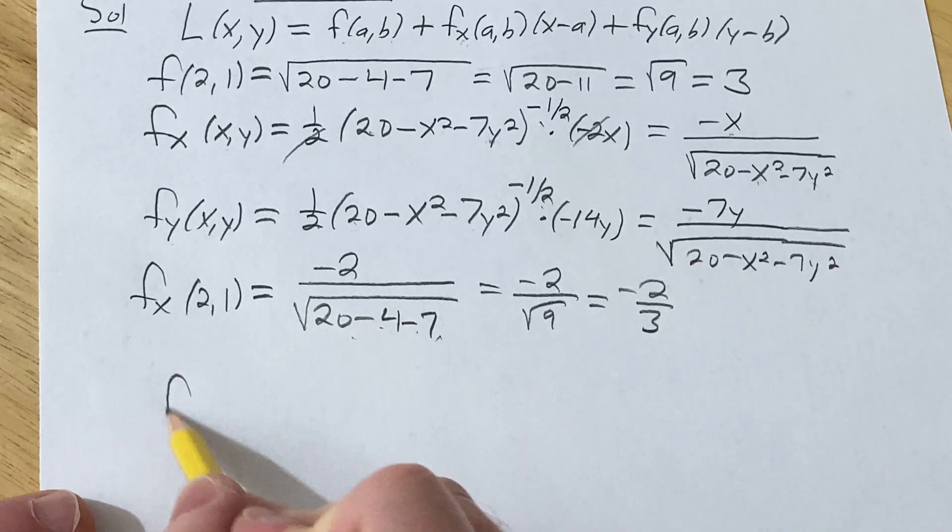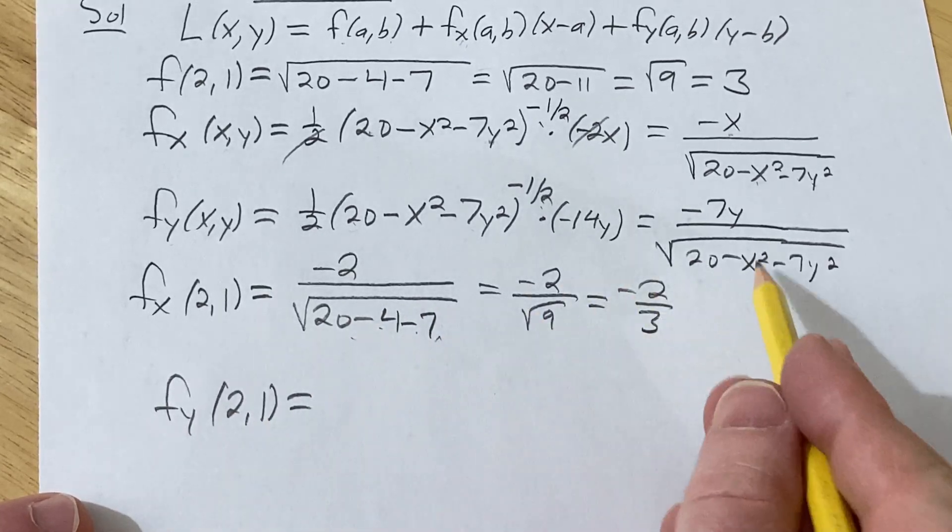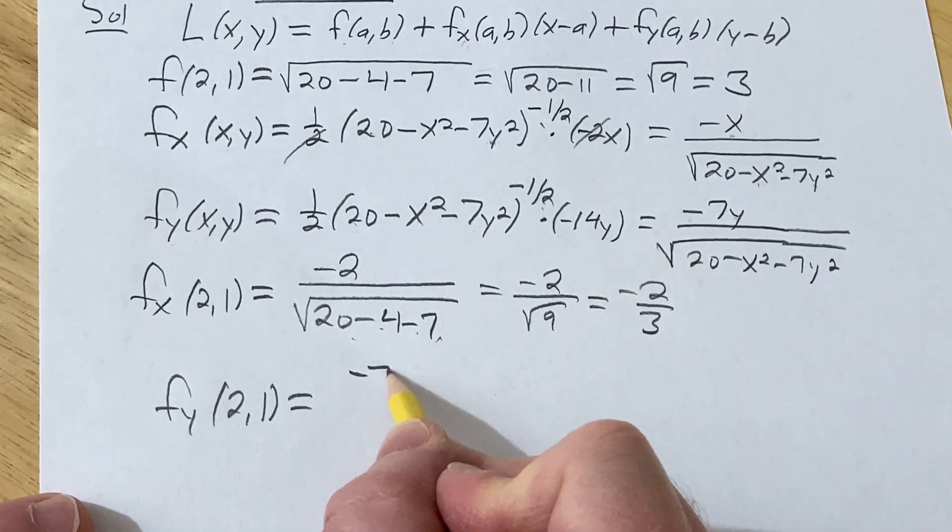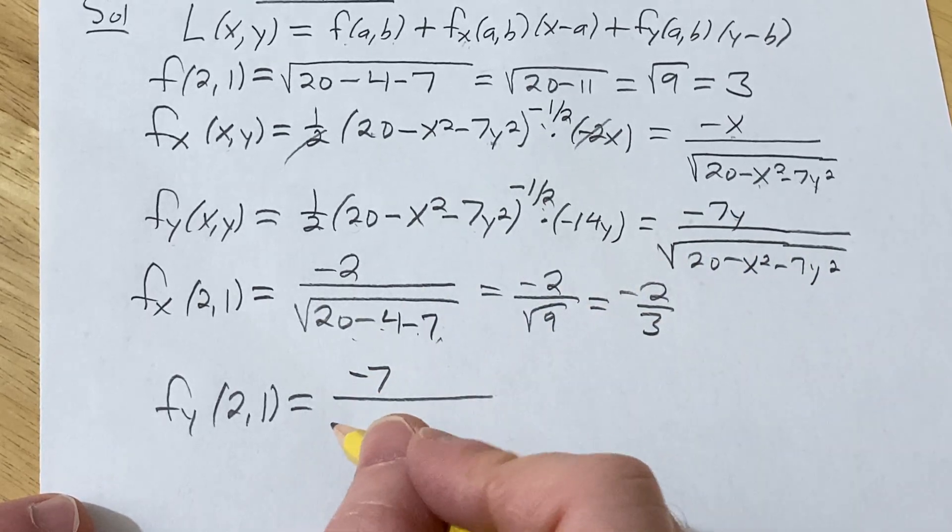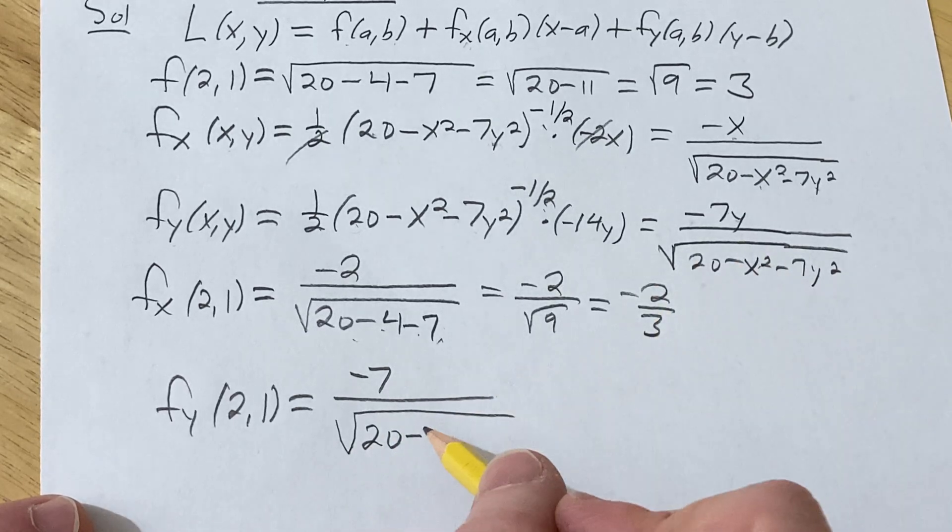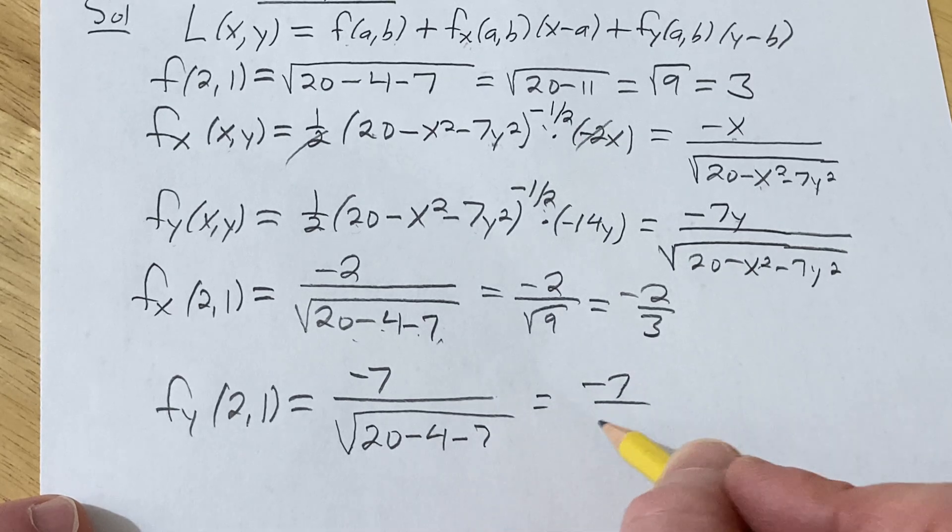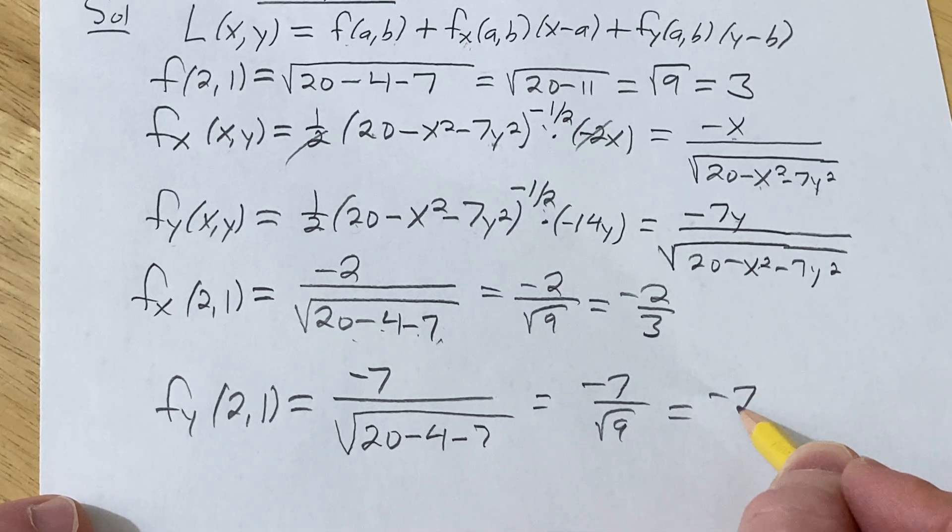And then we do fy at (2,1). Going kind of quick. So this time the y is 1, so it's -7 times 1, which is -7, square root (20 - 2² is 4 - 1² is 1). So we get -7 over the square root of 9, so we get -7/3.